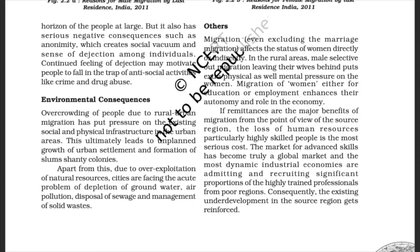Environmental Consequences: Overcrowding of people due to rural-urban migration has put pressure on the existing social and physical infrastructure in urban areas. This ultimately leads to unplanned growth of urban settlements and formation of slums and shanty colonies. Apart from this, due to over-exploitation of natural resources, cities are facing the acute problems of depletion of groundwater, air pollution, disposal of sewage, and management of solid wastes.